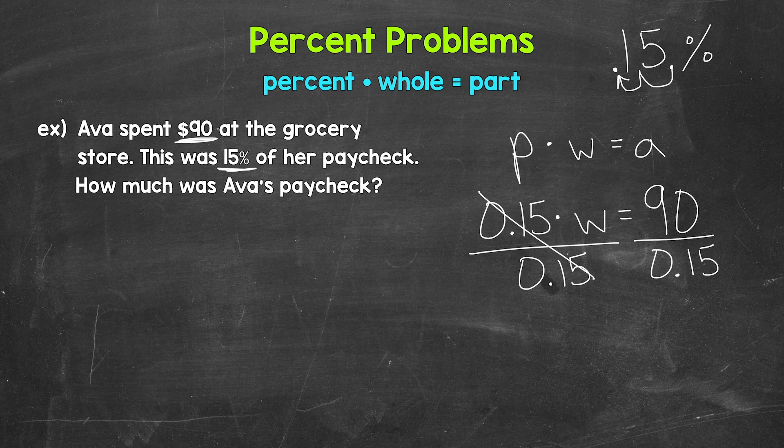Now on the left, these cancel each other out. W is now isolated. So we have W equals, and then on the right, we have 90 divided by 15 hundredths. That gives us 600.